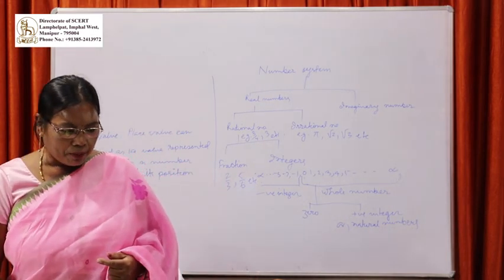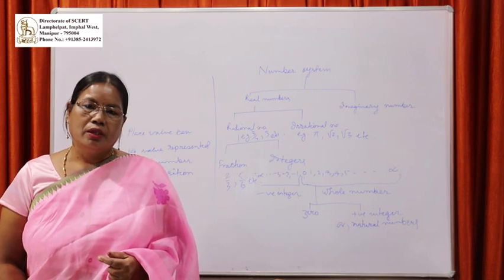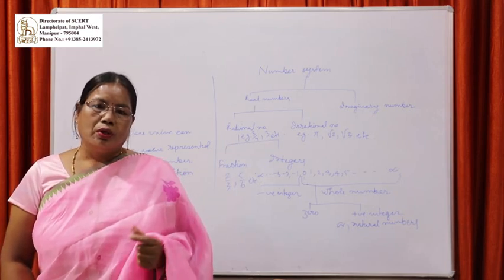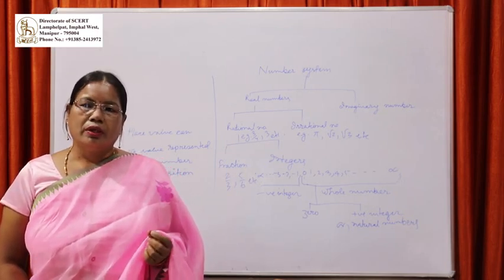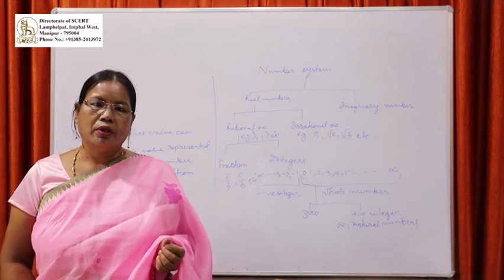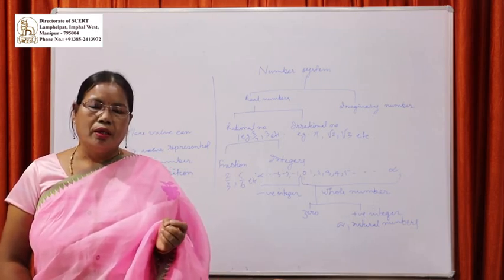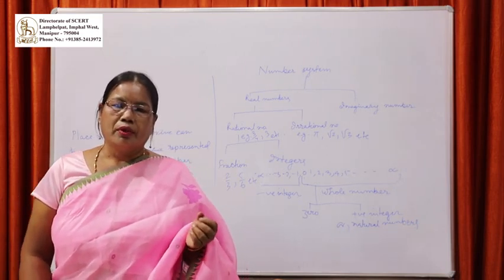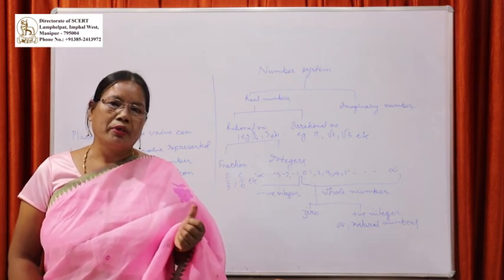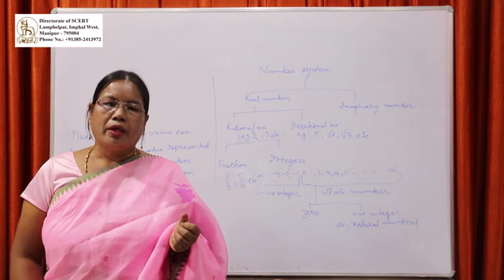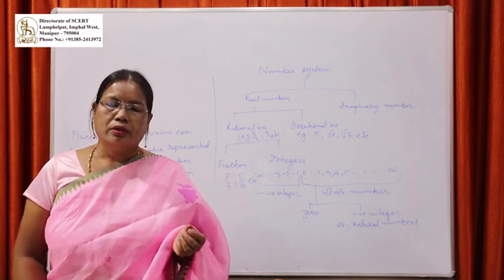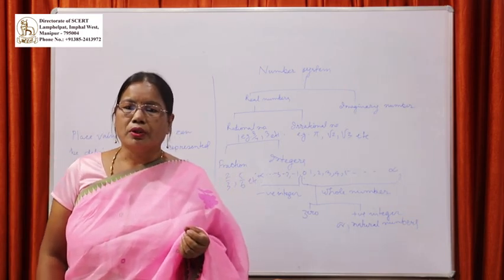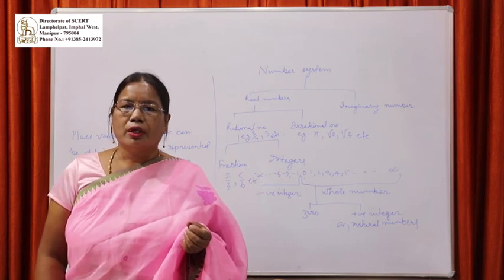Numbers are mathematical objects that can be used to measure, label, or count. The numbers go from zero, 1, 2, 3, 4, 5 up to infinity. This number line is continuous.